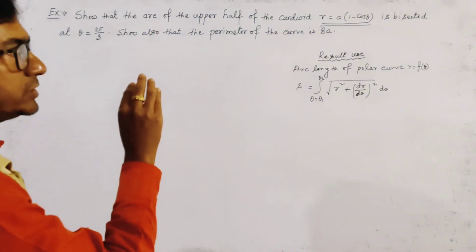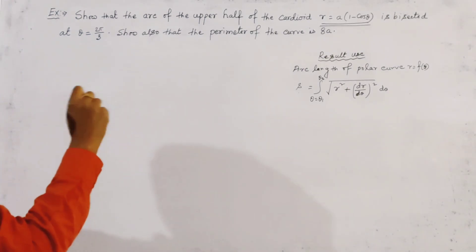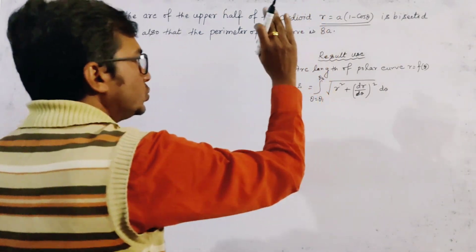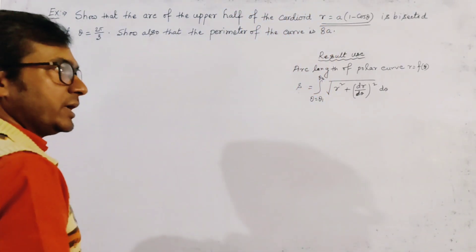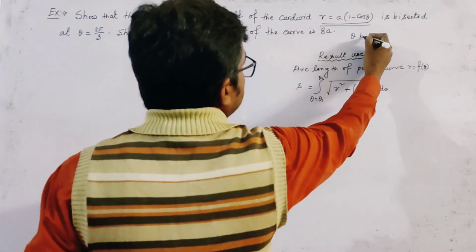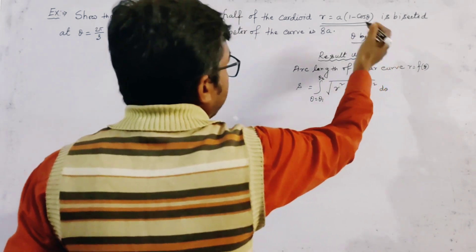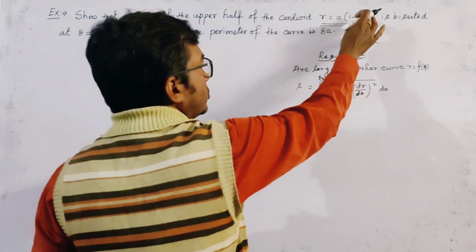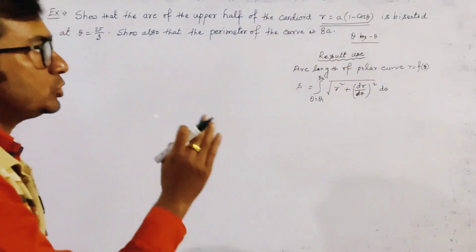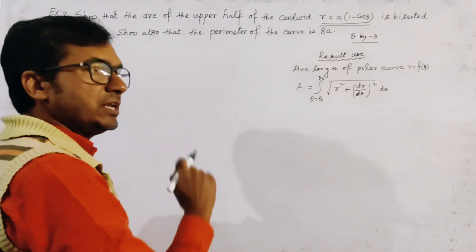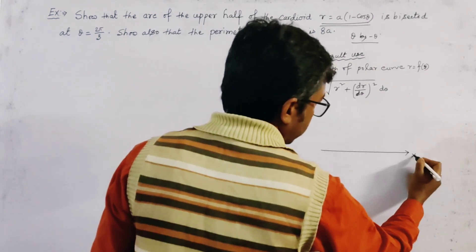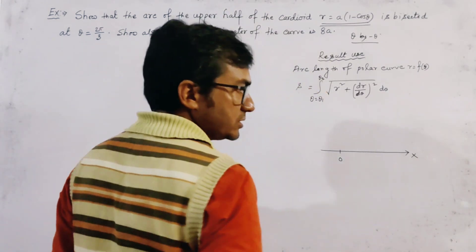First, we try to sketch roughly the given cardioid. To sketch any polar curve, we first replace θ by −θ. It is clear that the equation is unchanged if we put −θ in place of θ, so the curve is symmetric about θ = 0, that is, about the initial line.